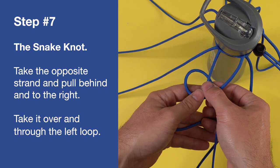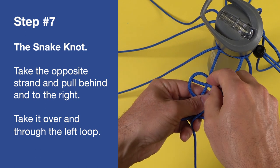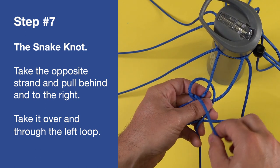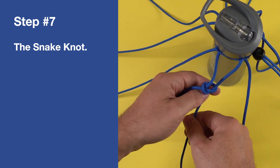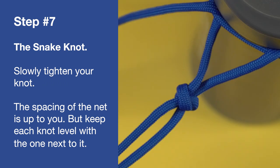Take the opposite strand and pull behind and to the right. Take it over and through the left loop. Slowly tighten your knot. The spacing of the net is up to you, but keep each knot level with the one next to it.